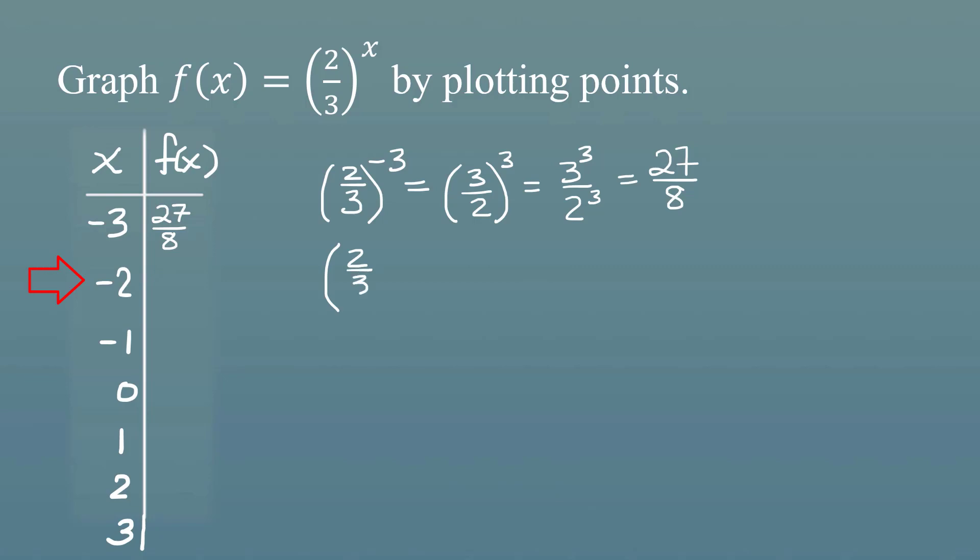Now let's raise two-thirds to the negative second power. That's going to give us three halves to the positive two power, which is three squared over two squared, or nine-fourths. Let's raise two-thirds to the negative one power. Well, that's going to be three halves raised to the positive one power. But anything to the first power is itself, so this is just going to be three halves.